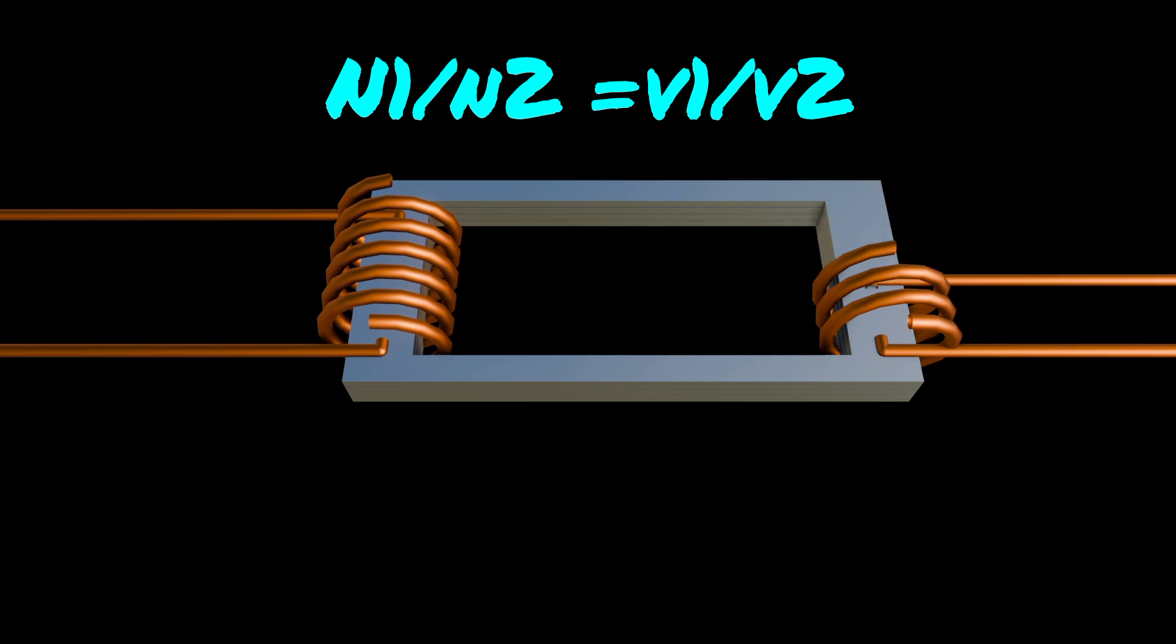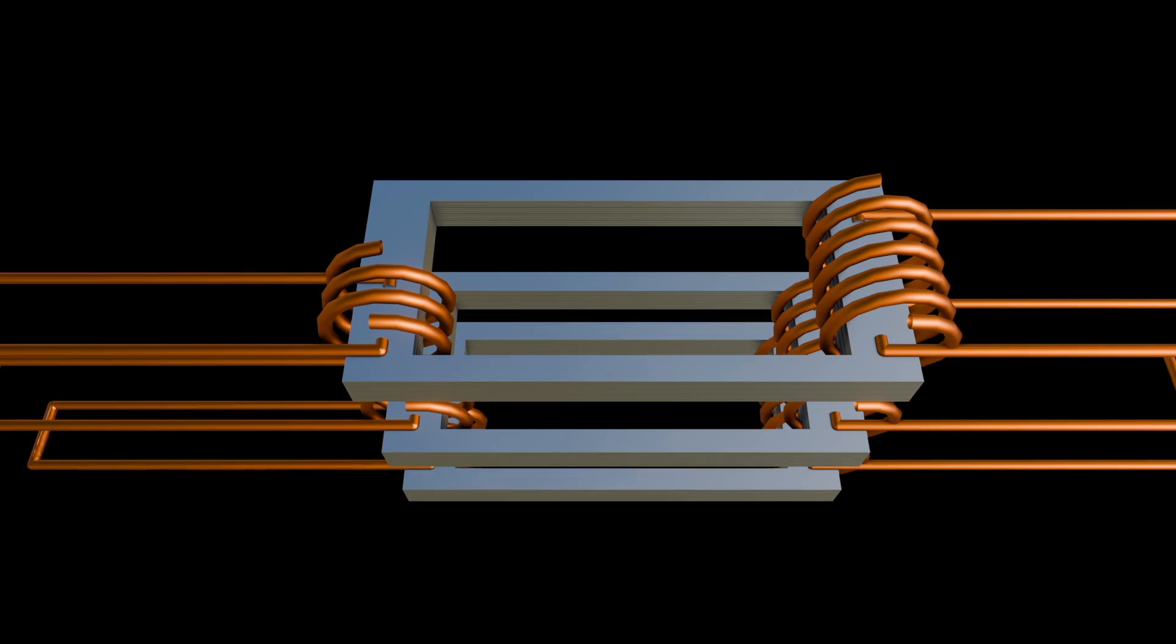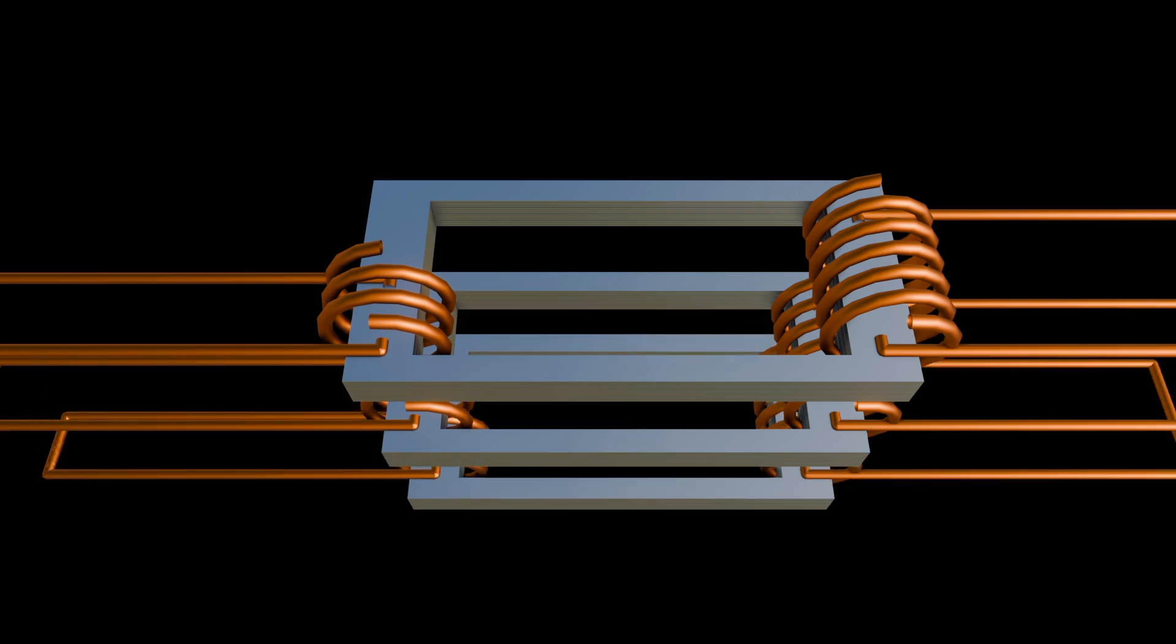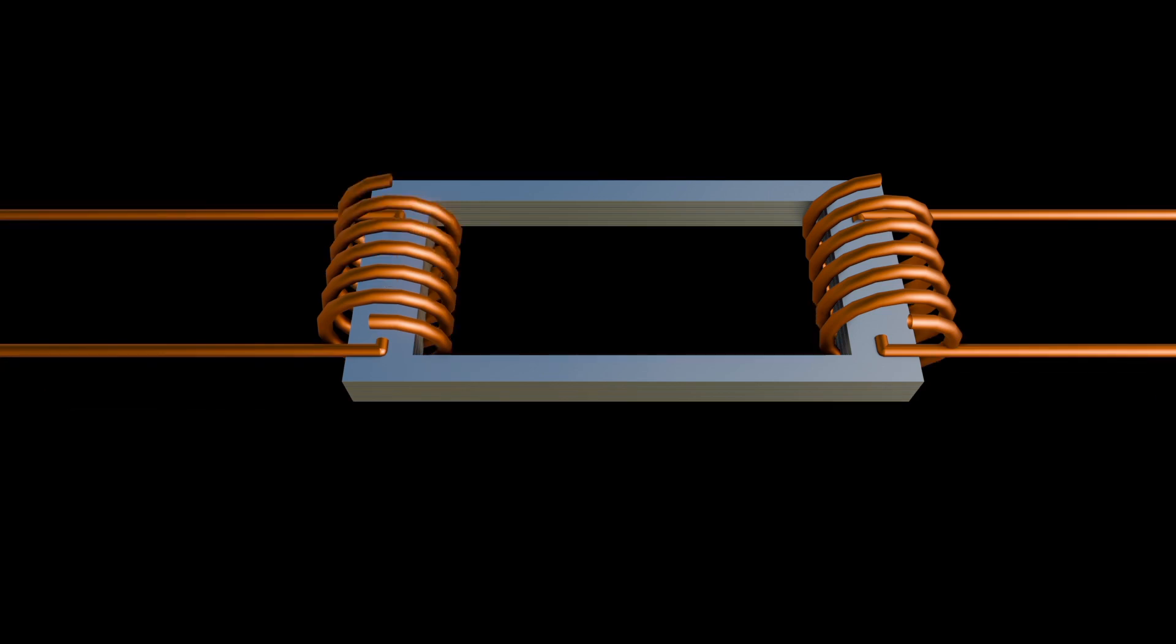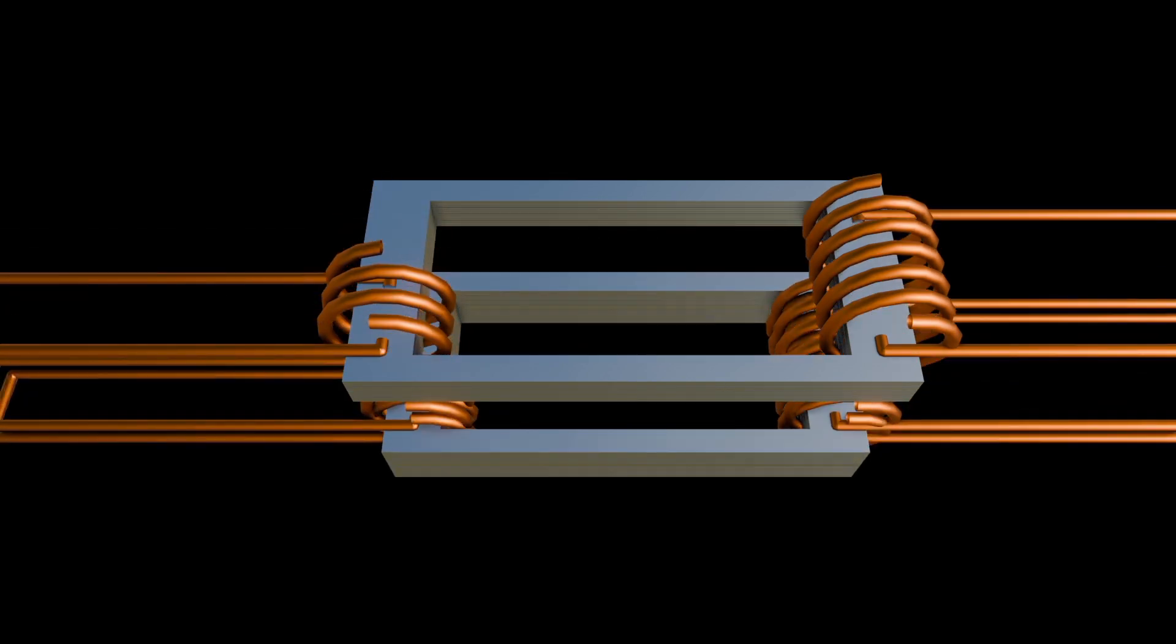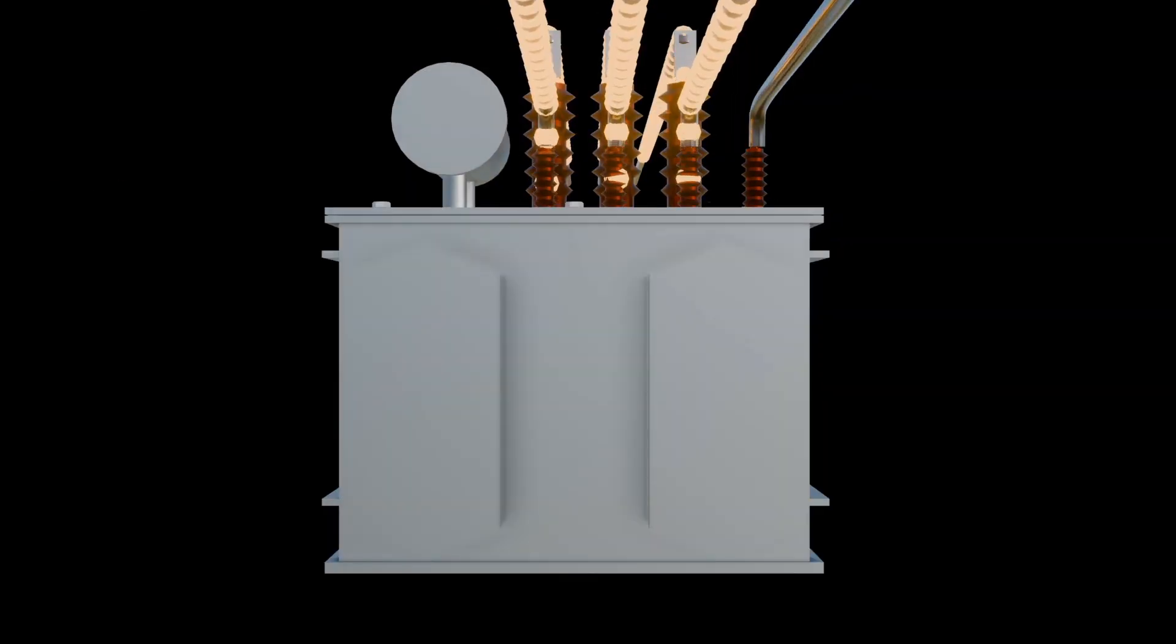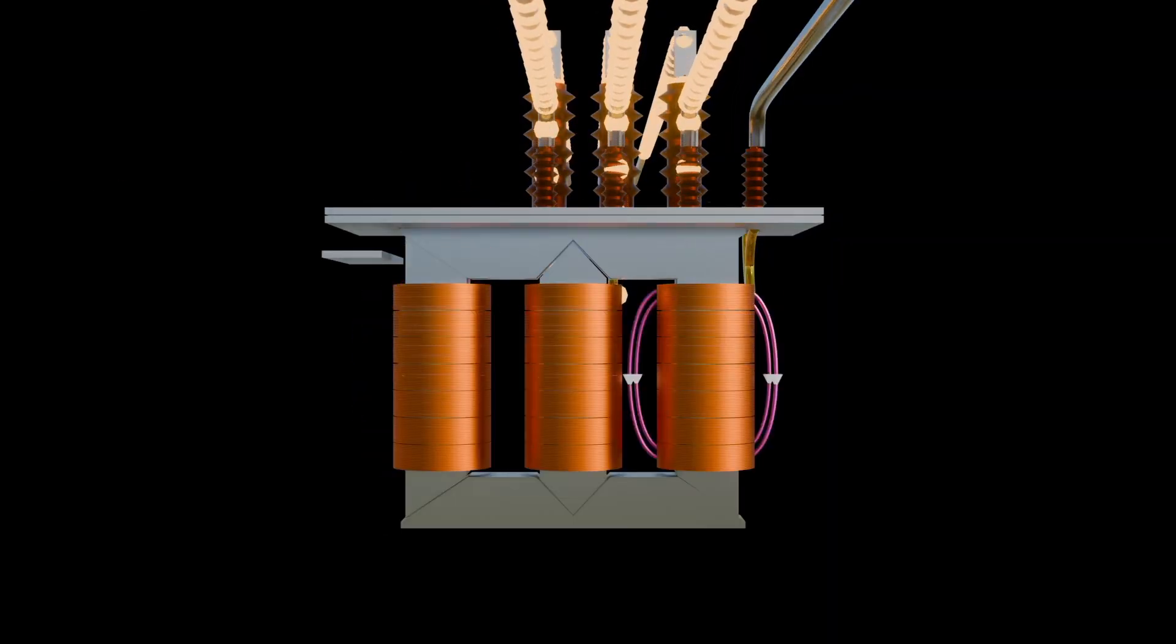Similarly for a three-phase transformer, it consists of three single-phase transformers combined into a single unit. Like single-phase transformers, the core of a three-phase transformer is typically made of thin, stacked and insulated sheets of silicon steel. These sheets are wound into a three-legged core to provide a path for the magnetic flux generated by the windings.